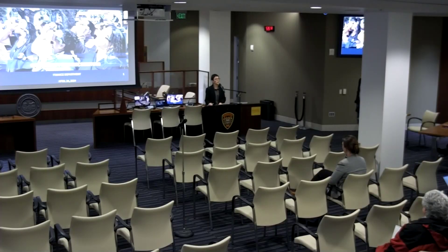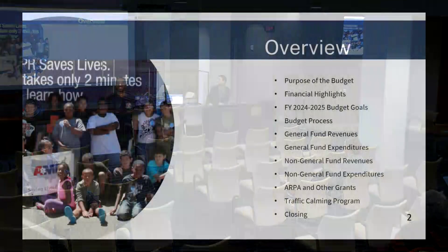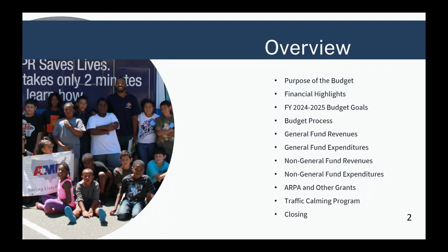Tonight we'll be going over our community budget meeting. We will be discussing the purpose of the budget, financial highlights, the budget goals, the budget process, general fund revenue and expenditures, non-general fund revenue and expenditures, ARPA and other grants, a traffic calming program, and then we'll close.